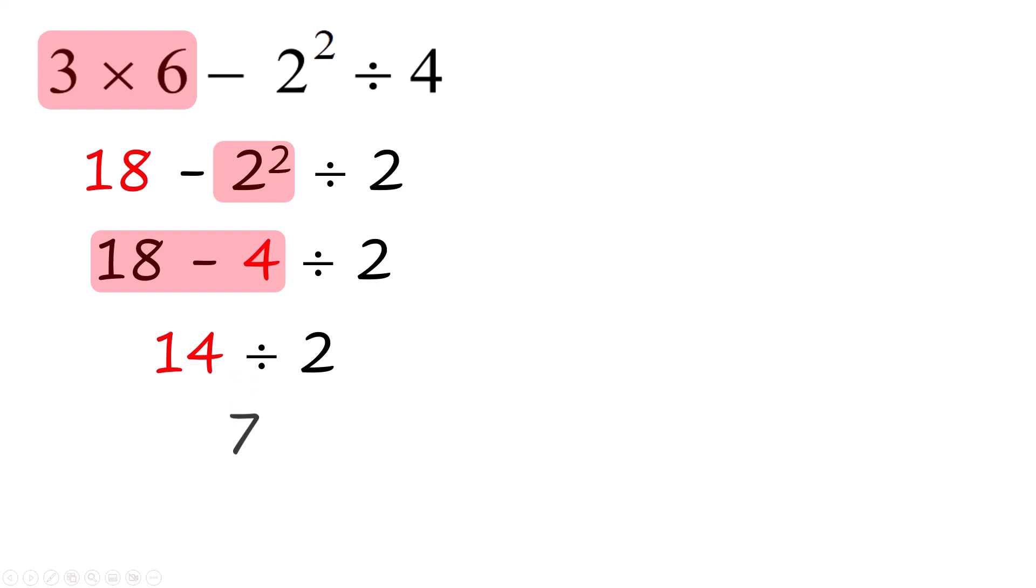14 divided by 2 is 7, which seems like a really good answer because it's a nice number. It's not weird, but it's incorrect because I forgot the order of operations.